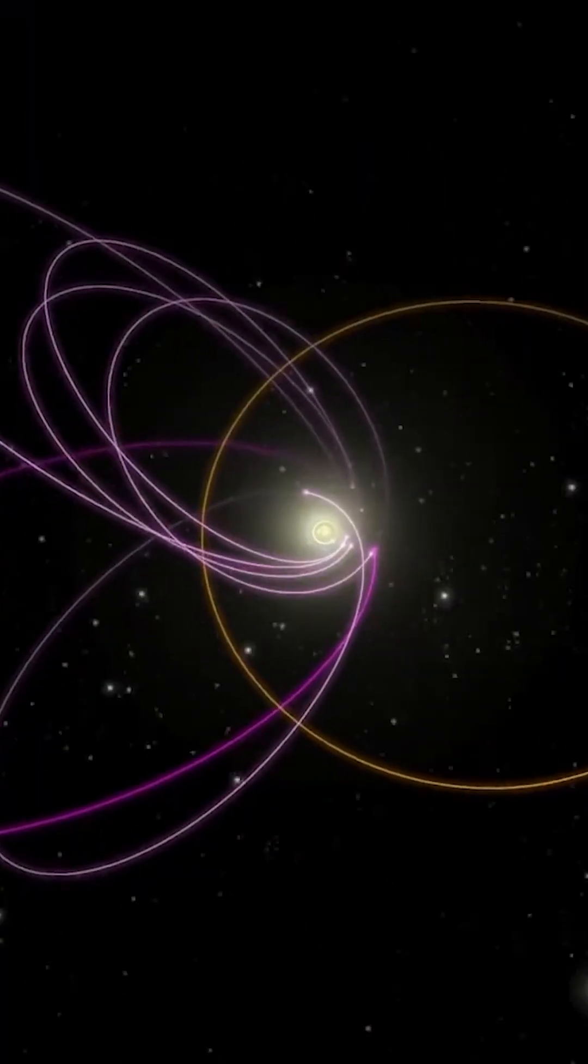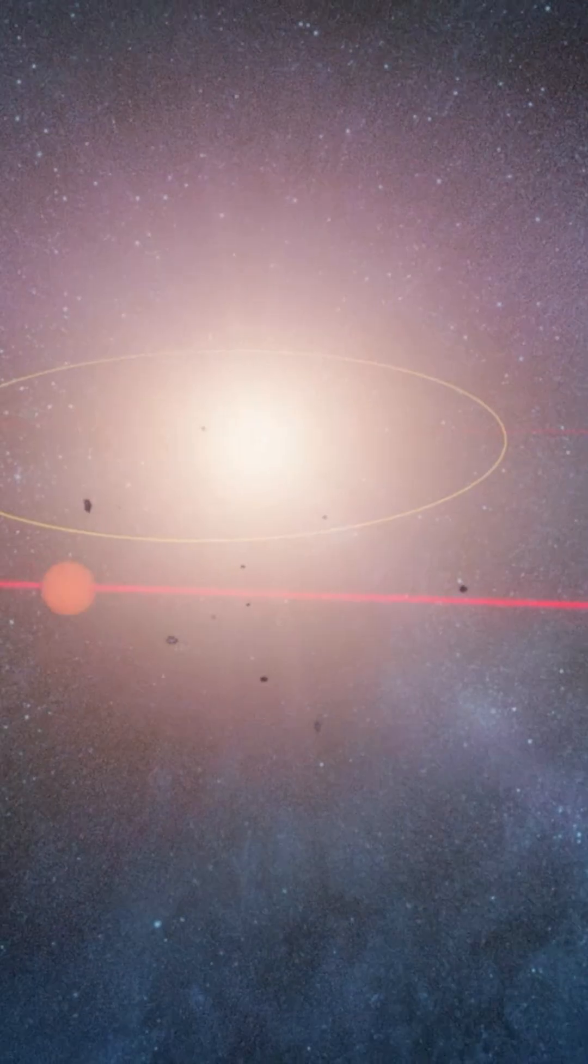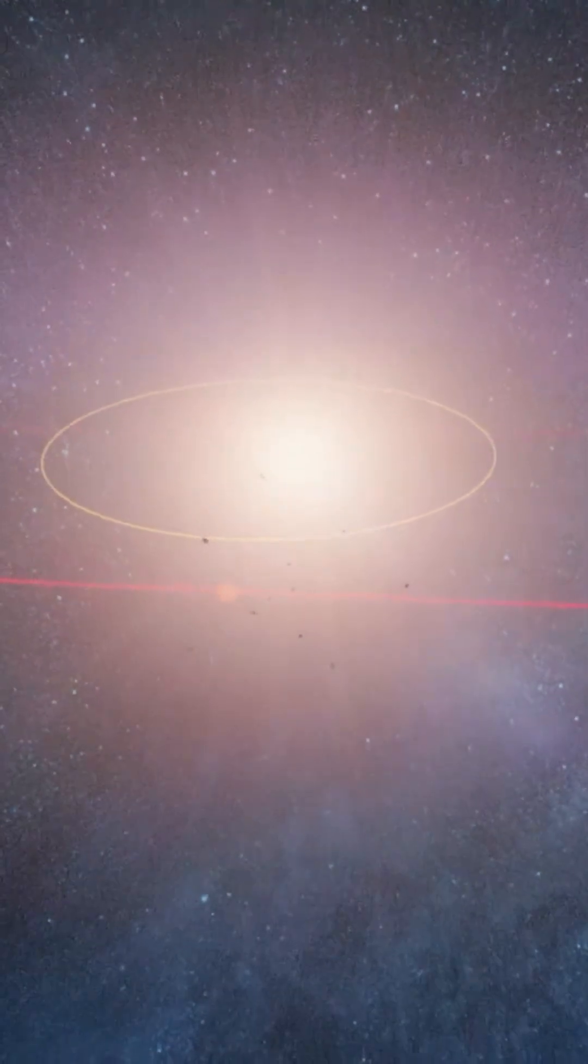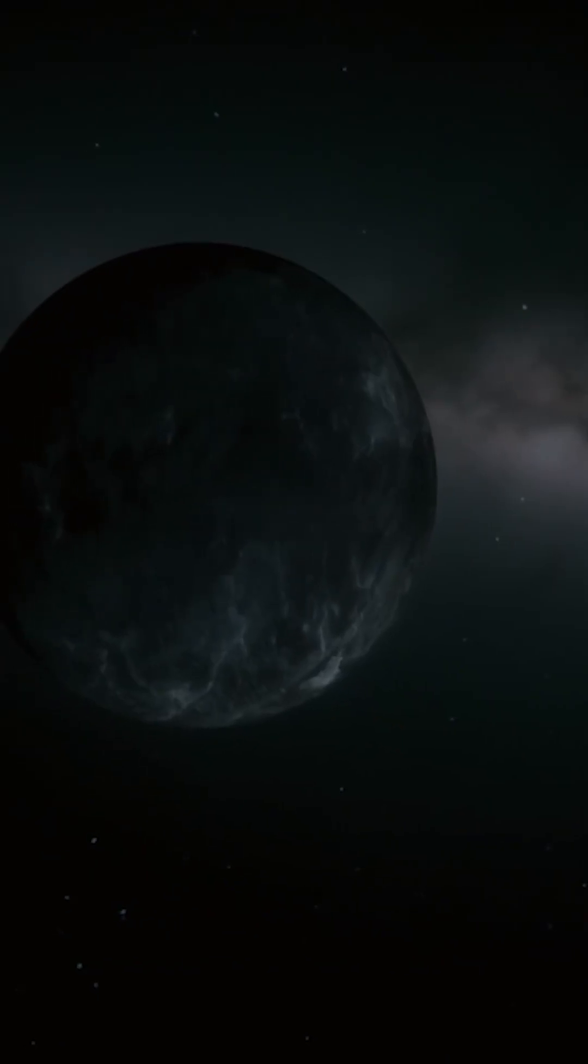Based on calculations, this possible planet would follow a long, stretched-out orbit tilted about 15 to 25 degrees from the plane of the solar system, taking thousands of years to complete a single trip around the sun.